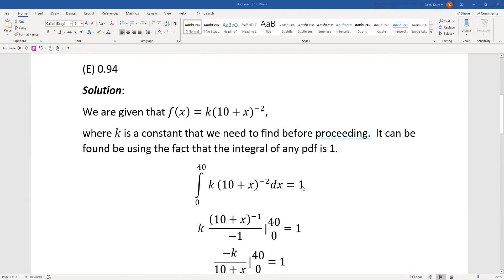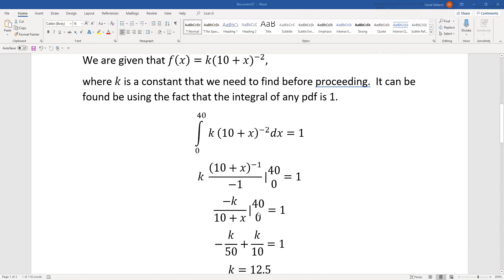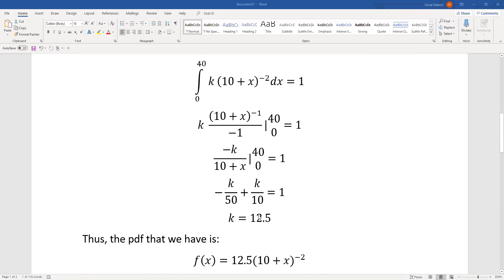The pdf will integrate to 1, and k is a constant. The (10+x)^(-2) is integrated by the power rule: (10+x)^(-1) over negative 1. When we substitute these limits for x, we eventually get k equals 12.5.